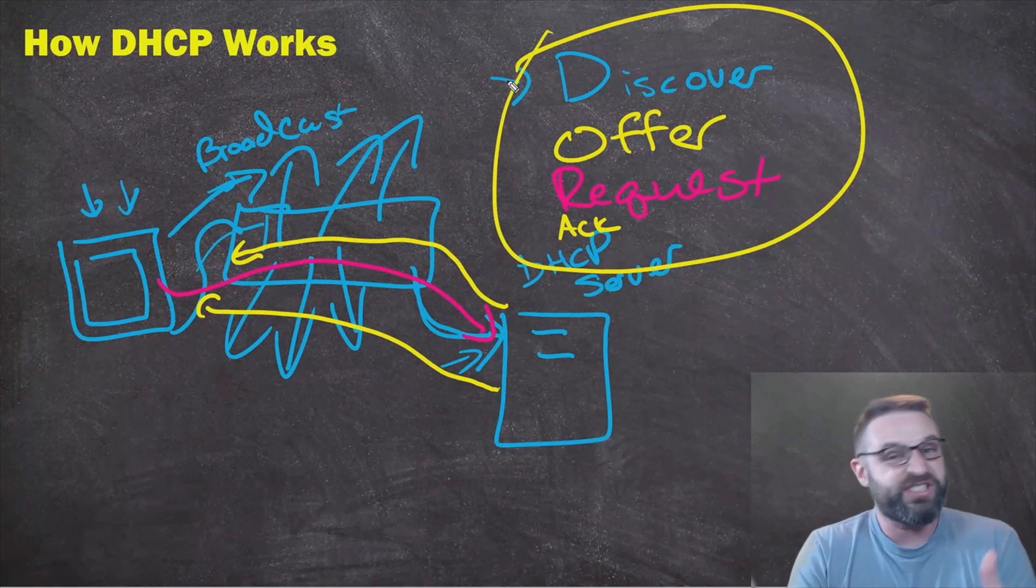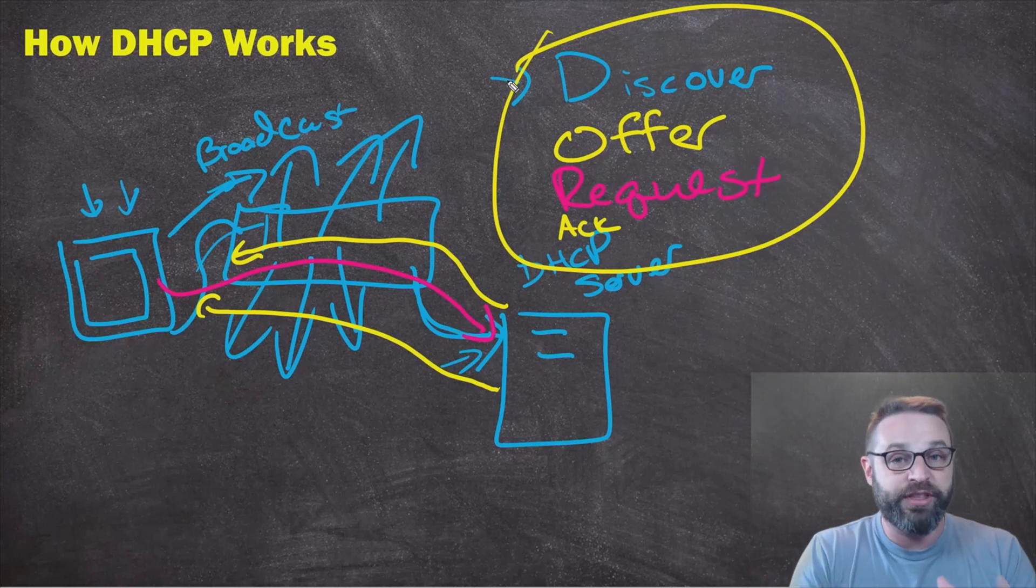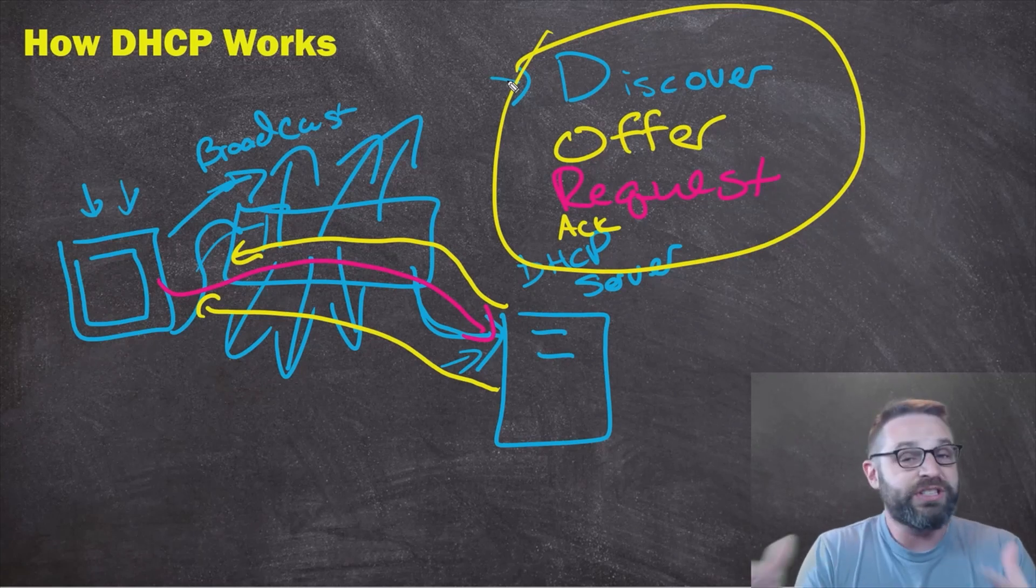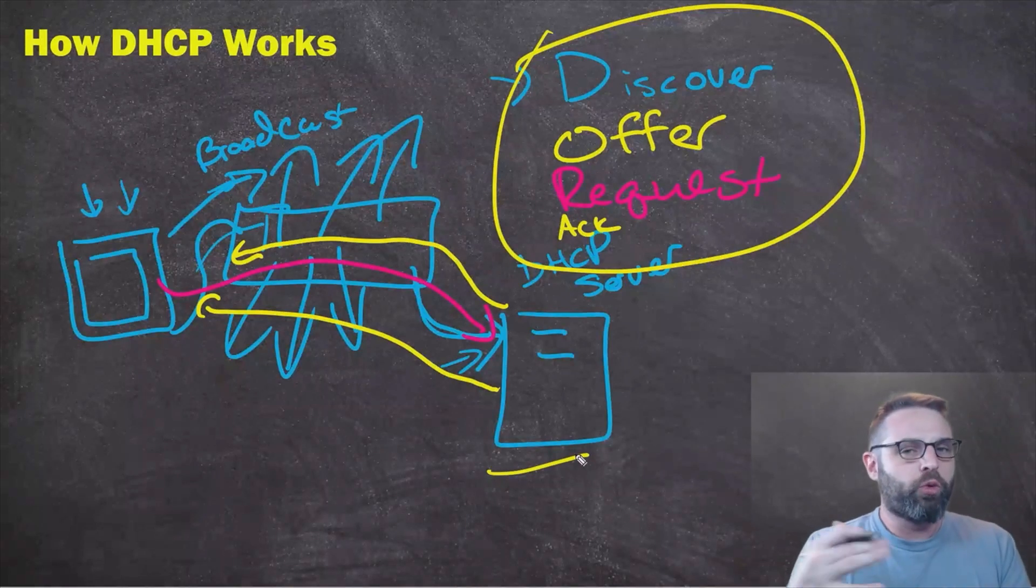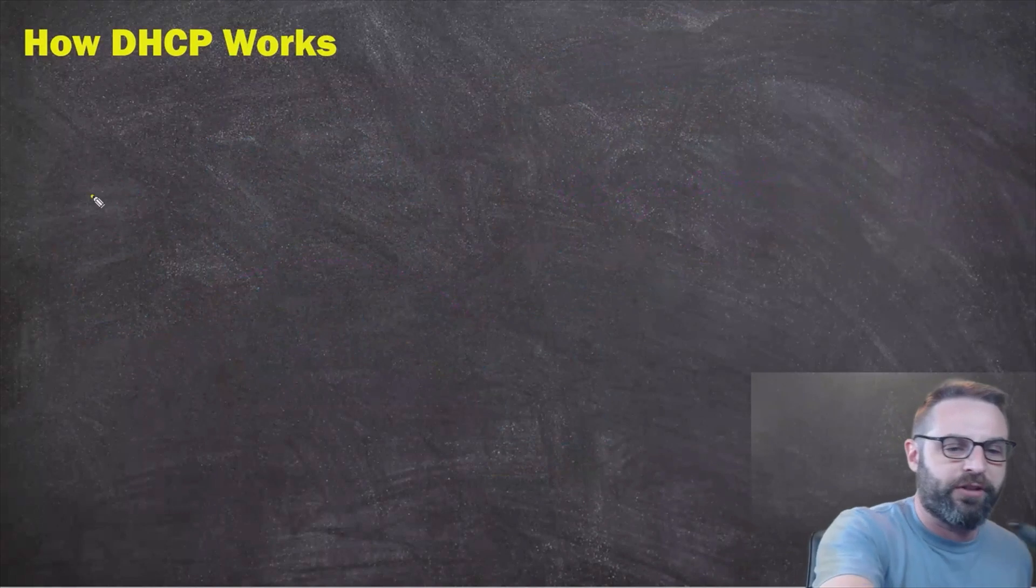And that's how the IP address gets assigned. Takes a second or two to go through the whole process and have an IP address and then communicate out to the network. It's fascinating that this happens and it happens so well.